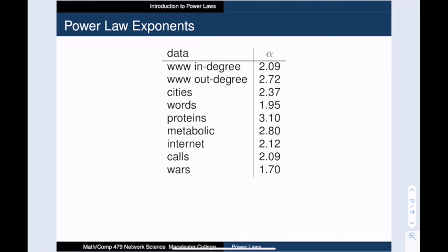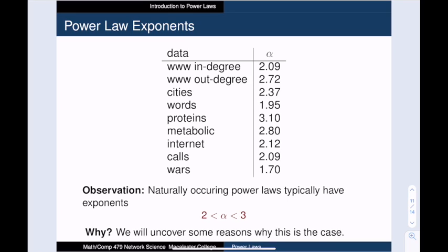Here we list the power law exponents for all of the examples we have talked about today. Looking at these numbers, we realize that the value of the exponent alpha is quite narrow. For the most part, alpha seems to range between 2 and 3.